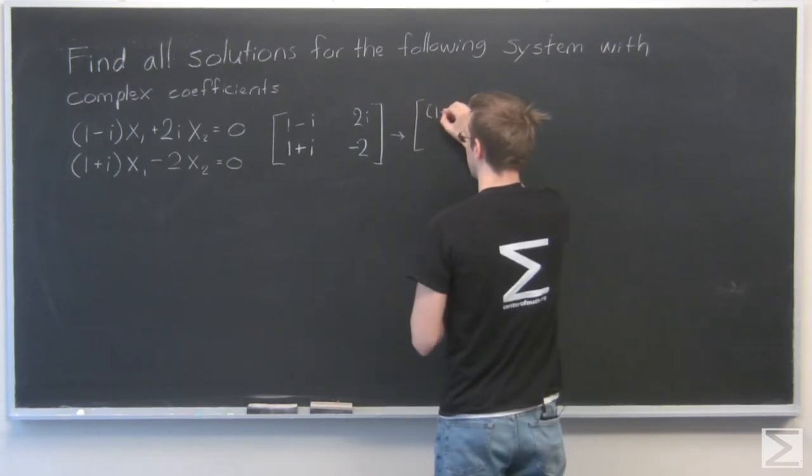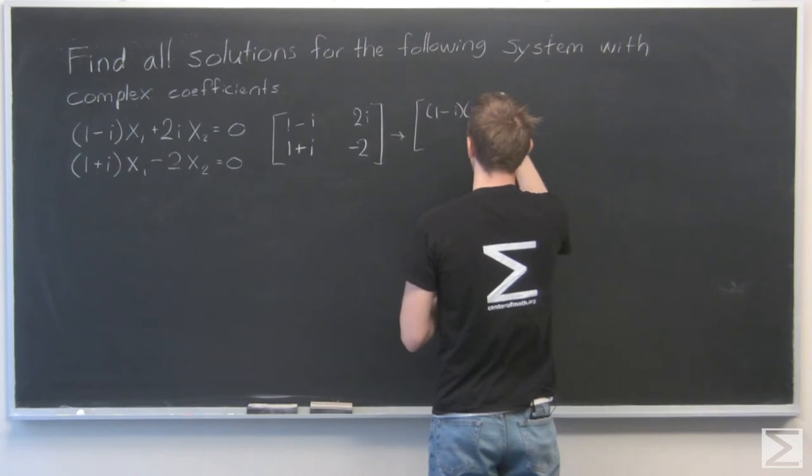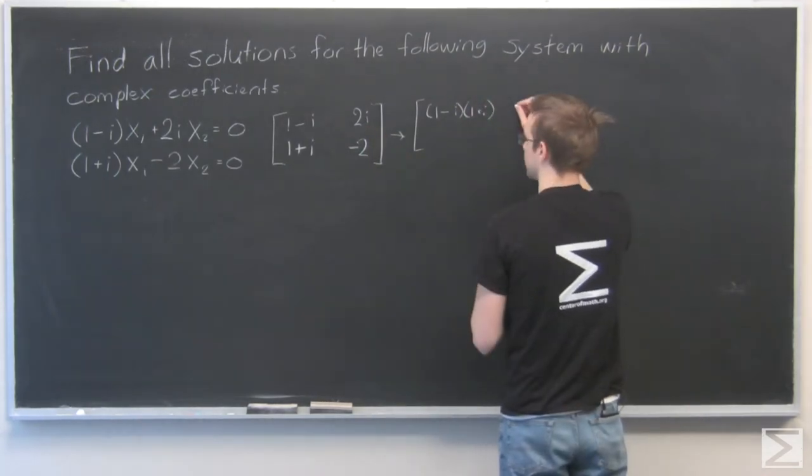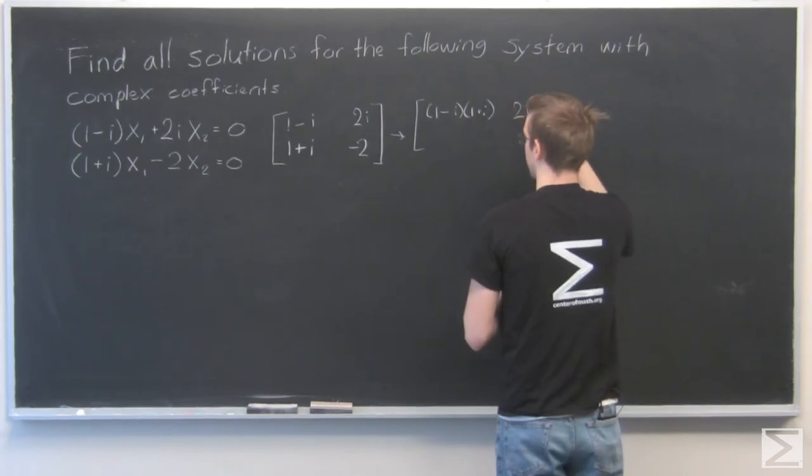So this becomes 1 minus i times 1 plus i, and I need to multiply the same thing by, for this one, 2i times 1 plus i.